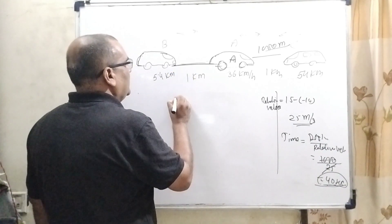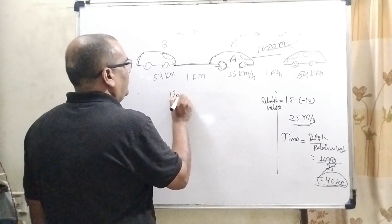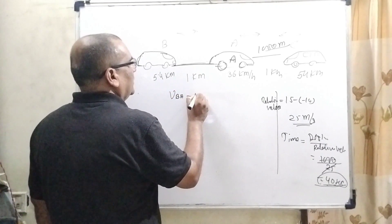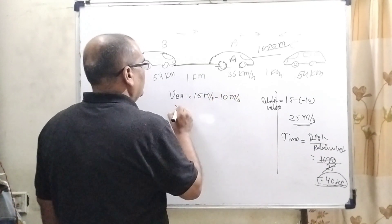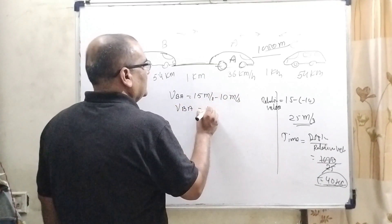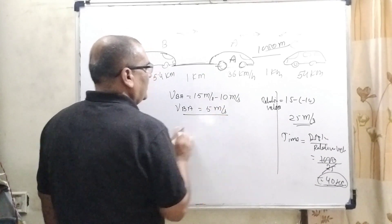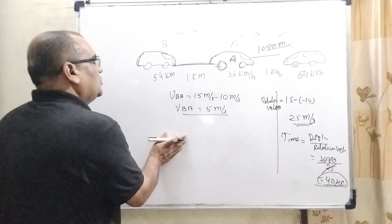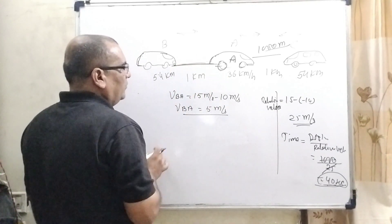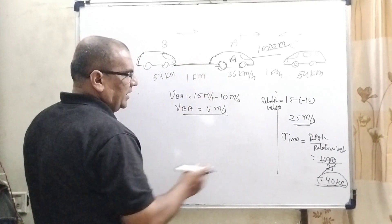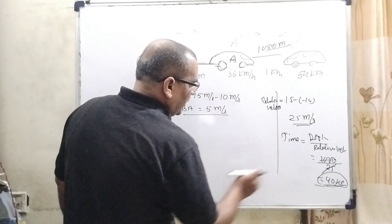Let us first find out the relative velocity. What is the relative velocity? Relative velocity of B to A, that is 15 meter per second minus 10 meter per second. Here B to A is 5 meter per second, that is relative velocity.